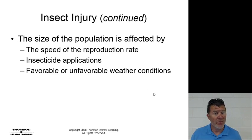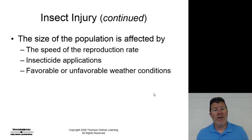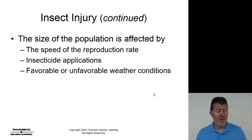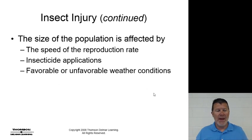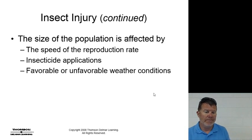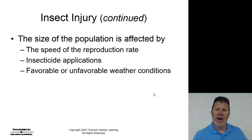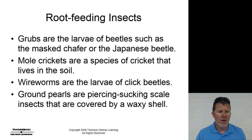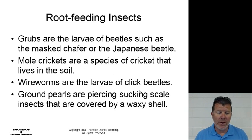The size of the population is affected by reproduction rate, number of generations per year, insecticide applications, and favorable or unfavorable weather conditions. With insecticides, you have to make sure you're buying the right insecticide at the right time in the insect's life stage. You don't want to buy a grub control when the grubs have already matured and become Japanese beetles.